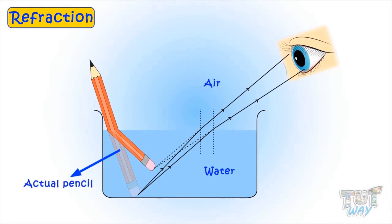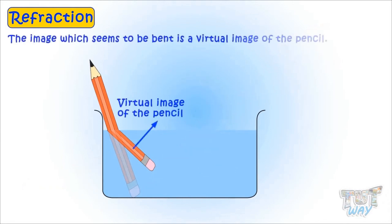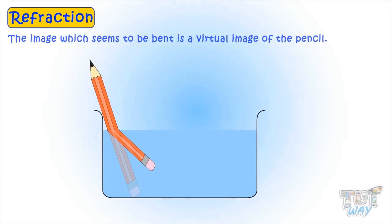The image which seems to be bent is a virtual image of the pencil. We cannot see the actual image of the pencil in the water because the light coming from it is bent. And we only see its virtual image, which seems as if it is bent.